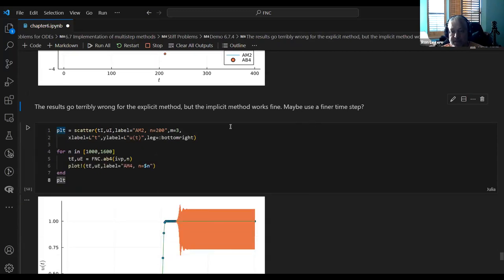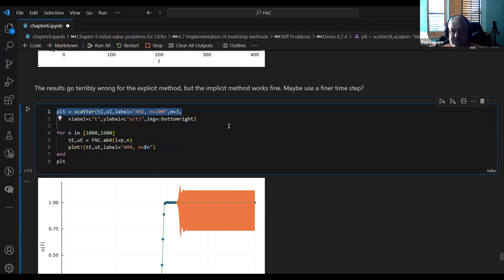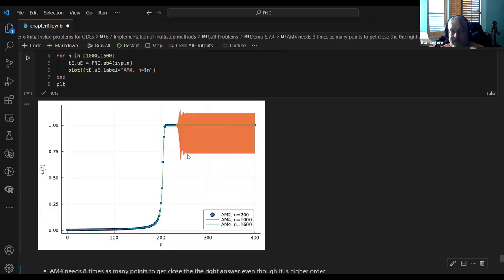Well, we could use a finer time step, and that's what we do here. So we just take the smaller and smaller Hs, and sure enough, as we take, if we take a time step of 1,000, it oscillates like crazy through this part. If we take time step of 1,600, finally it starts to settle down. So it requires 1,600 points, whereas the AM2 method only required 200 points, the more stable implicit method. So that's why you would use an implicit method for these kind of problems, even though it would seem more costly. It turns out for stiff problems, it's less costly to do this root-finding thing.